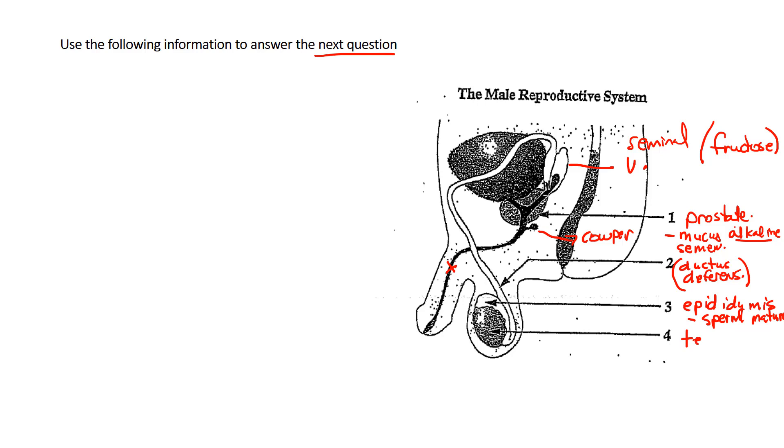Number four is the testes. This is the male gonads. Really quickly, we know that it's going to produce testosterone.